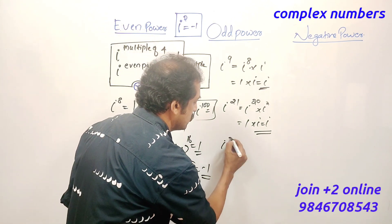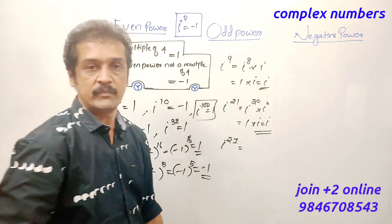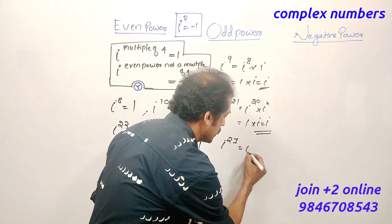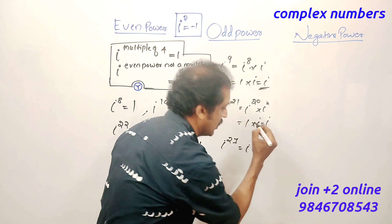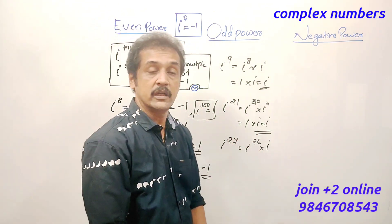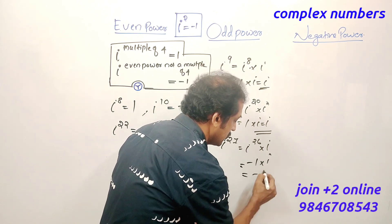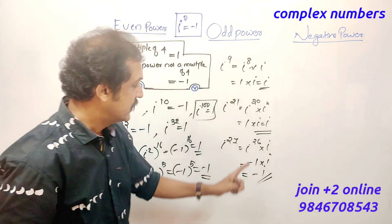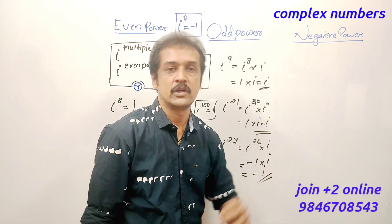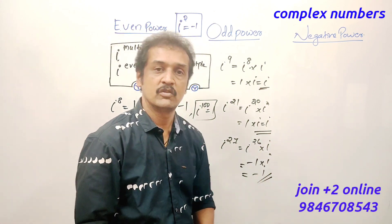Next, i raised to 27. That is i raised to 26 into i. i raised to 26 is minus 1, so minus 1 into i gives answer minus i. Because 26 divided by 4 gives remainder 2, therefore i raised to 26 is minus 1, and the answer is minus i.